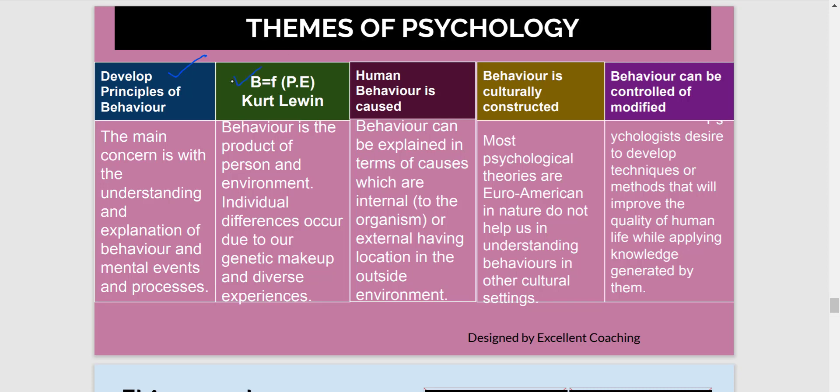The second theme involves the formula: B = f(P × E), where B is behavior, P is person, and E is environment. This formula is given by Kurt Lewin, who is very famous for his field theory. It says that behavior is a product of the person and the environment — meaning whatever behavior we have is due to our personality or the traits we possess, as well as the influence of our environment.